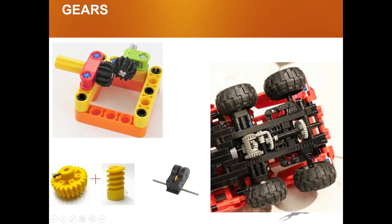This is a worm and wheel combination. And you can see this — this is a basic gear system. This is also a basic gear system that is under the car.